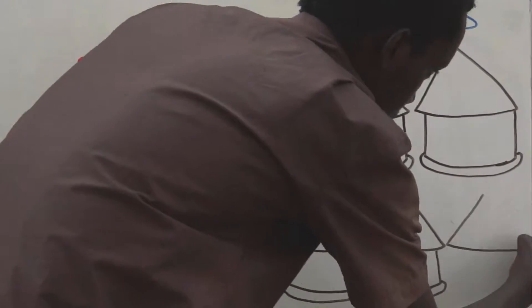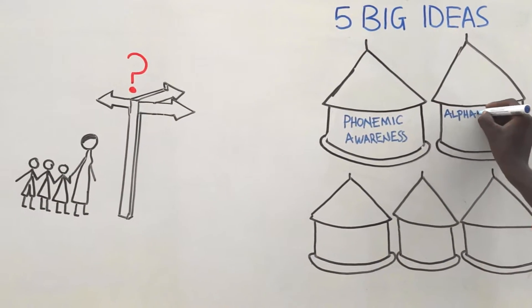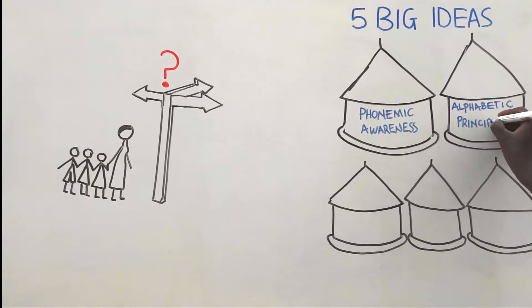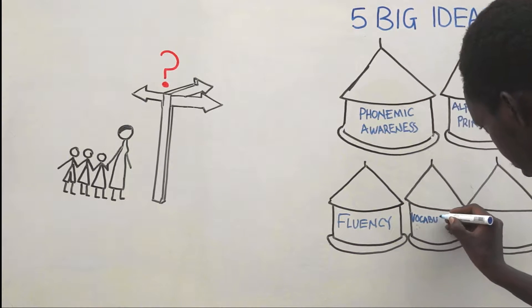The five big ideas of literacy instruction are phonemic awareness, alphabetic principle, fluency, vocabulary, and comprehension. Now, let's quickly review these five basic skills.